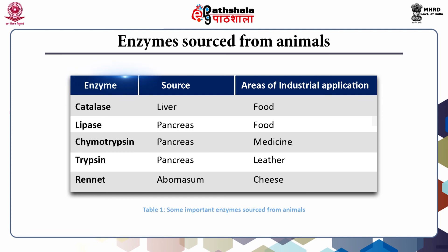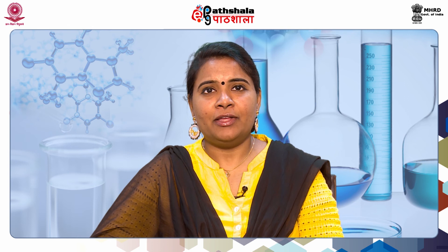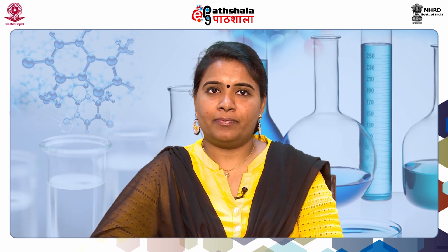The table here enlists some commonly used industrial enzymes derived from animals and their industrial applications. Lipase, trypsin, and chymotrypsin are derived from the animal pancreas. Rennet is another complex of enzymes usually produced in the stomach of ruminant mammals and is used in cheese production.